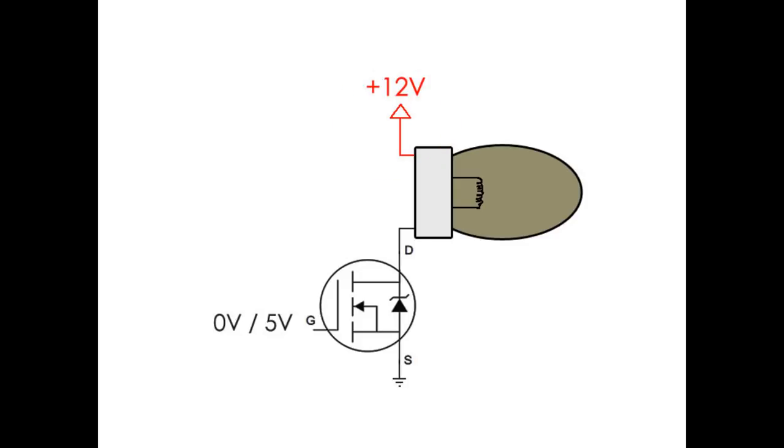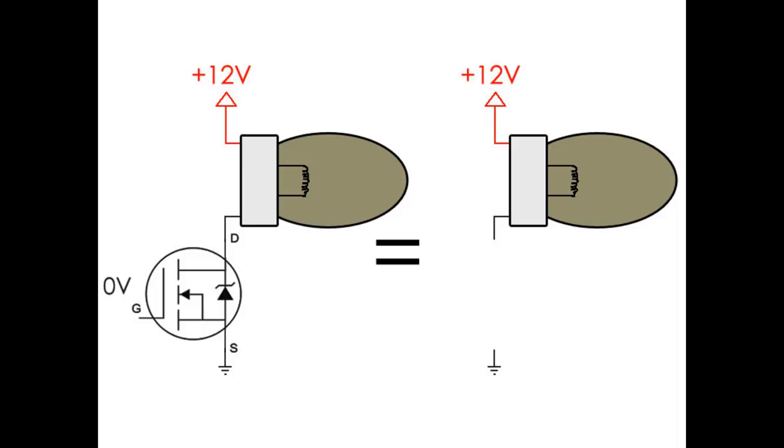Now whether the transistor is off or on will depend on whether the gate is at 0 volts or 5 volts. Here's the equivalent circuit when the gate is at 0 volts. The transistor stays off, so no current can flow, so the headlight stays off.